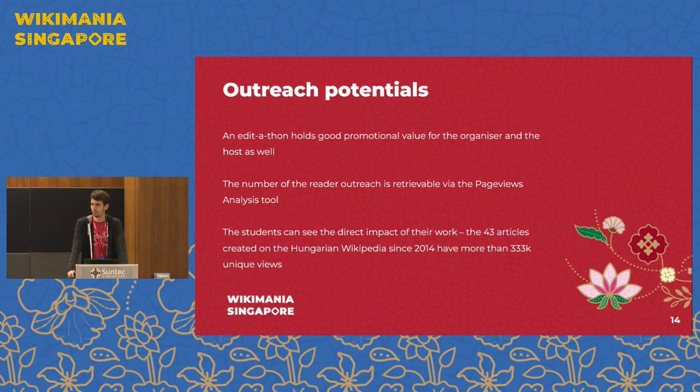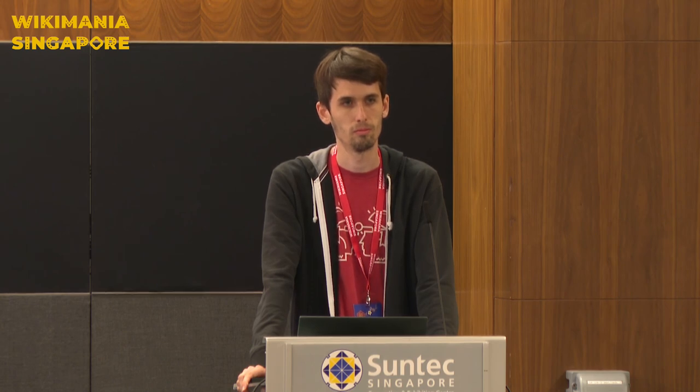That was everything I wanted to share. Now for questions — especially about how we did it or tips for organizing an editaton. A question came: you mentioned the Hungarian Wikipedia has significant gaps where articles exist on the English Wikipedia but not on the Hungarian one — don't students just opt to translate from English to Hungarian, which would be quicker, instead of doing entirely new research?